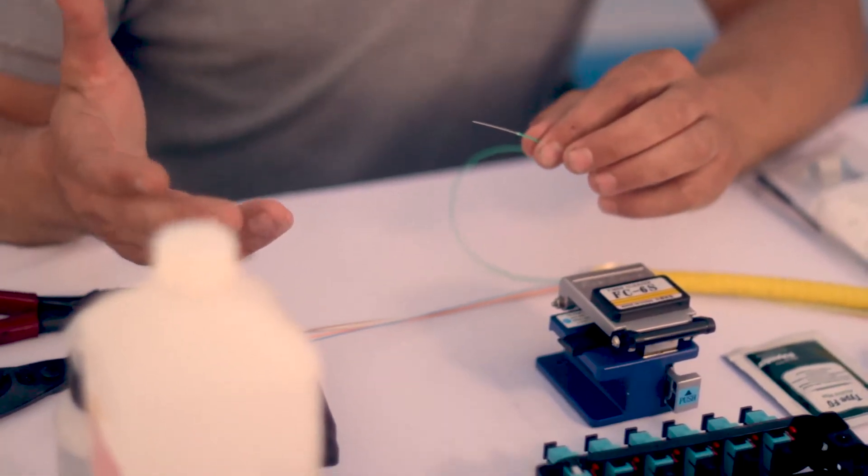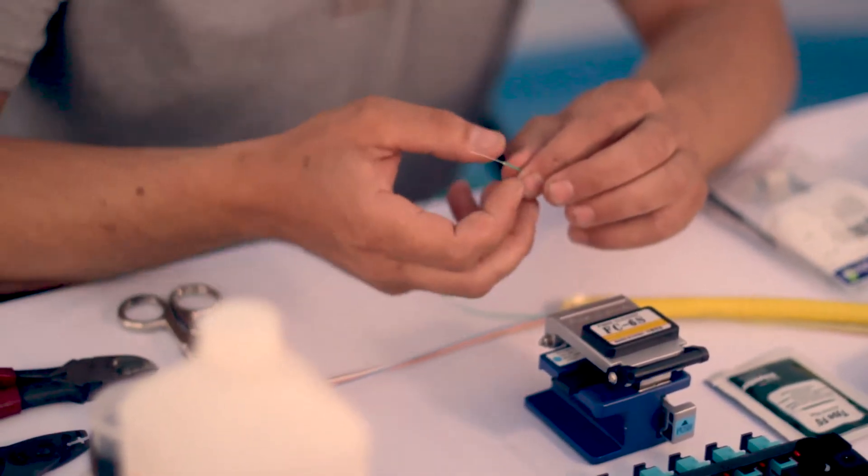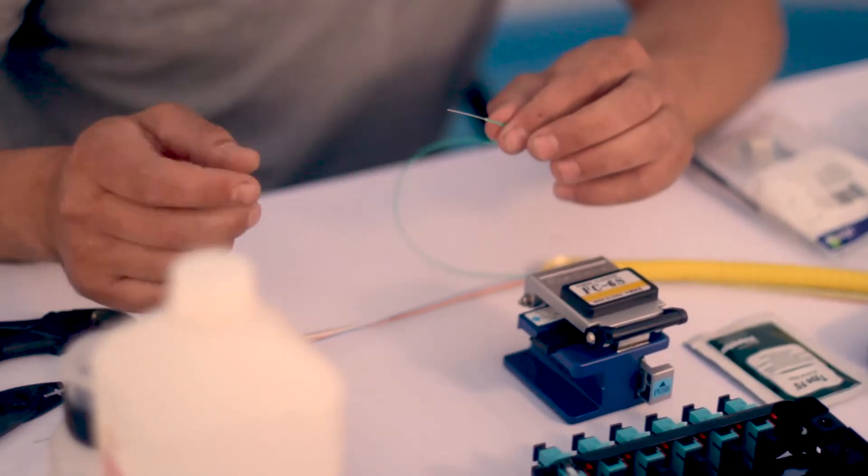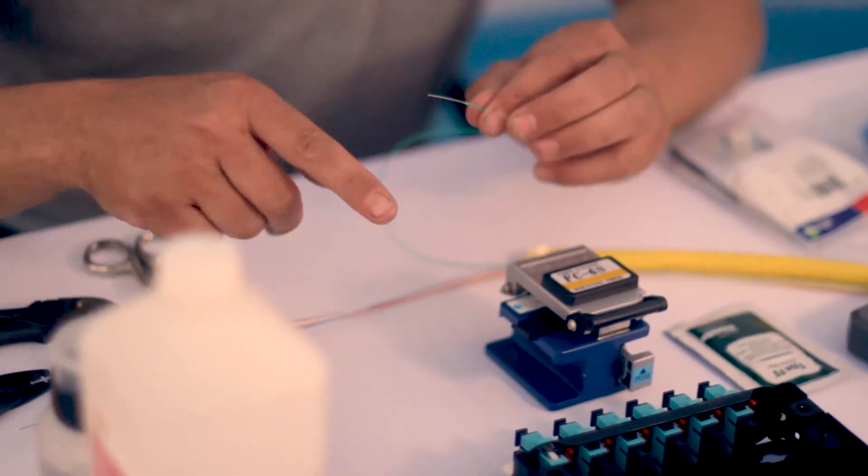What I like to do first is I like to do a strength member test where you just make sure that you didn't nick into that glass. If you did, this will obviously break. So I like to go back and forth in each direction, and I pretty much know yeah, that's not nicked, it's strong.